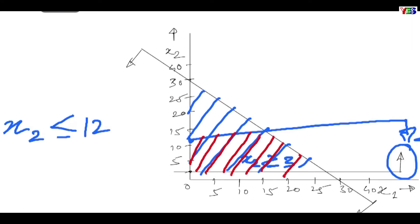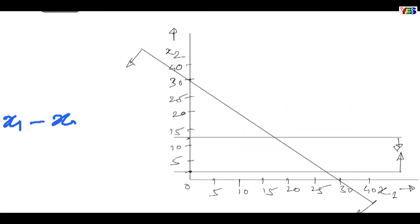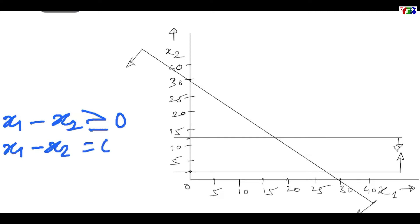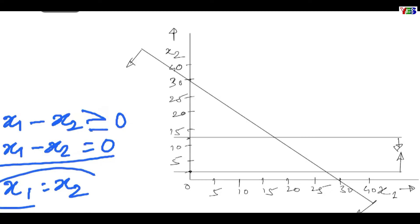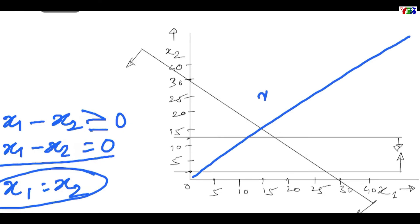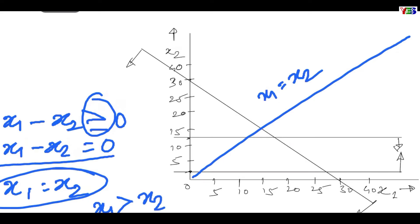We can observe that now the region has reduced. The next constraint is x1 minus x2 greater than or equal to 0. Taking the equal to sign to draw the line, we get x1 equal to x2. Since we have the greater than sign, this leads to x1 greater than x2. So for any point, x1 should be greater than x2, and the arrow will be like this.